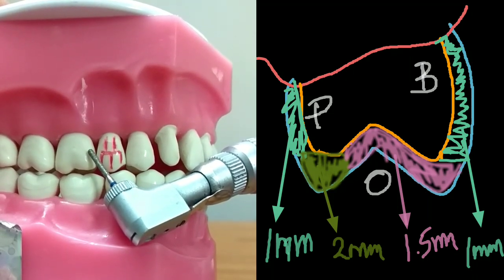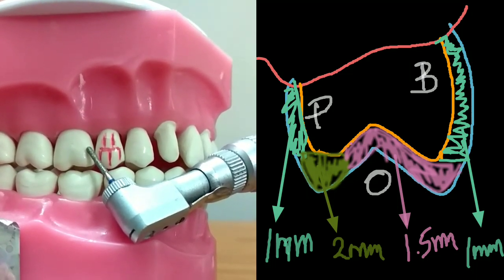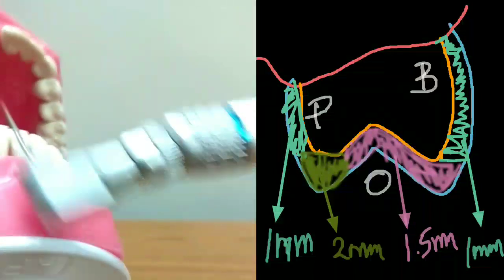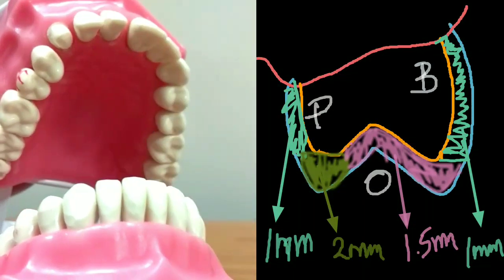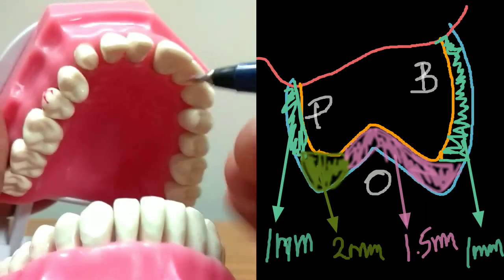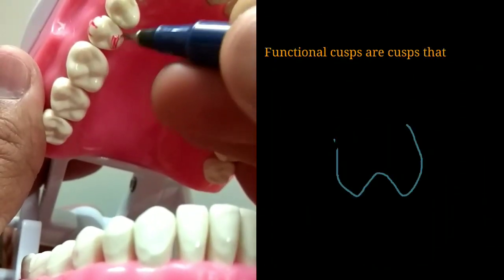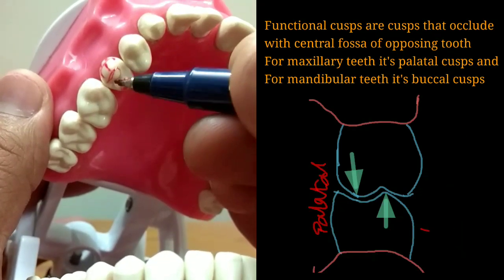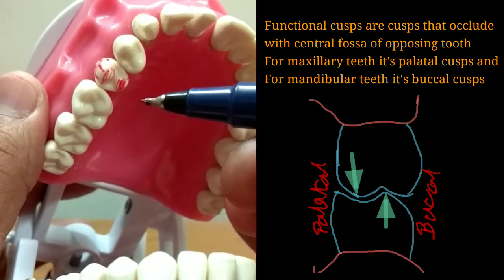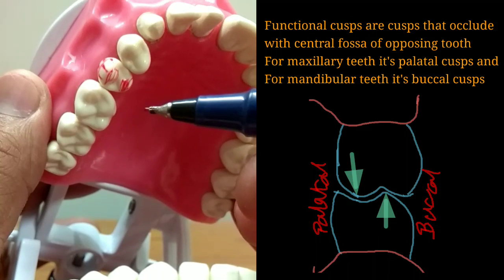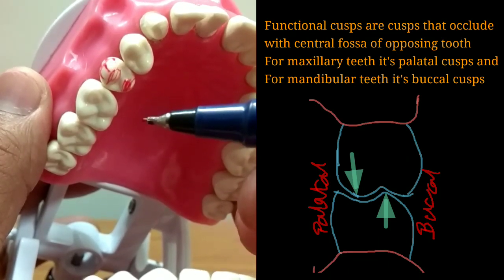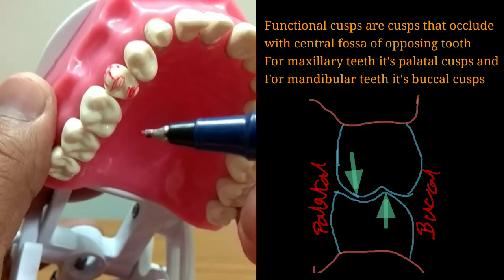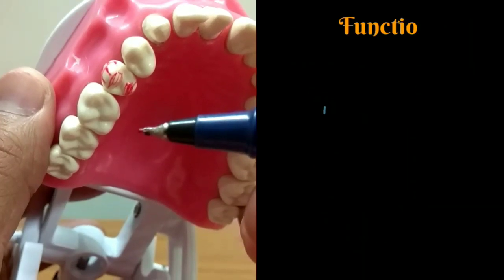The functional cusp is a cusp which occludes with the central fossa of the opposing teeth. For a maxillary premolar, the palatal cusps are the functional cusps and the labial cusps are non-functional cusps. Reduction in the functional cusp area will be about 1.5 to 2 millimeters, and reduction in the non-functional cusp area will be about 1 to 1.5 millimeters.